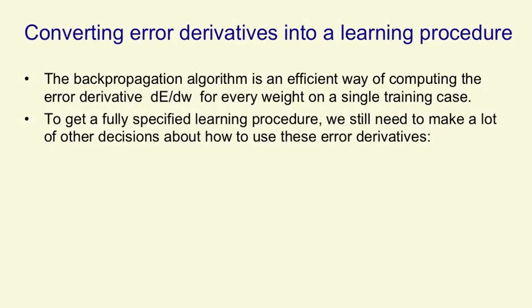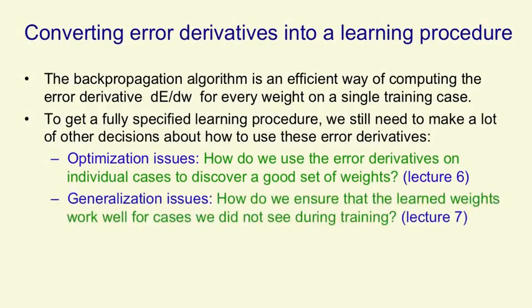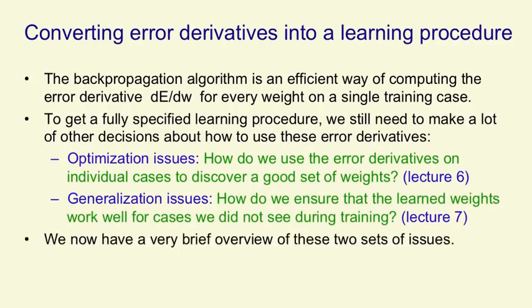We need to make lots of other decisions. Some of these decisions are about how we're going to optimize, that is, how we're going to use the error derivatives on the individual cases to discover a good set of weights. Those will be described in detail in Lecture 6. Another set of issues is how do we ensure that the weights we've learned will generalize well - that is, how do we make sure they work on cases we didn't see during training. Lecture 7 will be devoted to that issue. What I'm going to do now is give you a very brief overview of these two sets of issues.